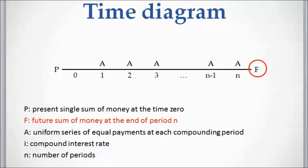The other variable is F, which is the future sum of money at the end of period n. This is the amount of money that is received or paid in the future, at the end year or end month. We could also write it above the end year; it's the same.